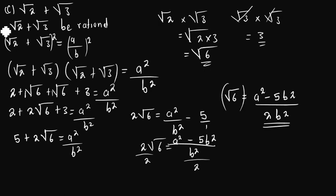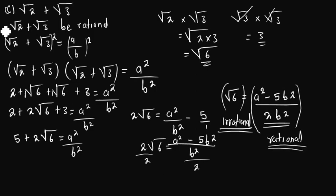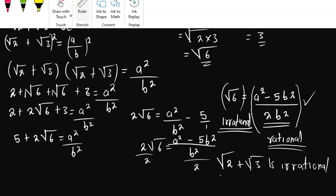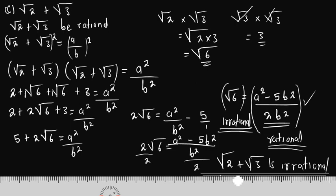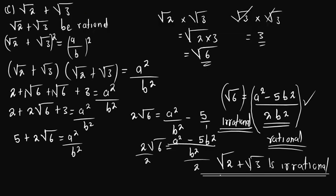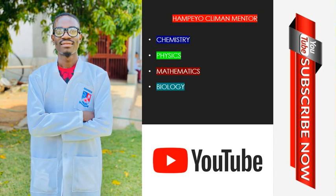Now, what we have on the left is root of 6, which is irrational. But on the right-hand side we have a rational expression. This is a contradiction. Therefore we have proved that root of 2 plus root of 3 is irrational. Whenever you are proving irrational numbers, use the contradiction method, and if it gives you something rational on one side and irrational on the other, conclude from there. If you find this video helpful, consider subscribing to my channel and hitting the like button. Thank you.